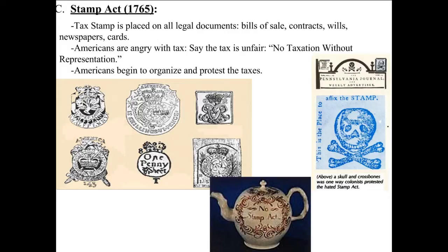In 1765, the British Parliament came up with another tax to put on the colonies to raise revenue to pay off the French and Indian War, and it was called the Stamp Act. Just like stamps that go on letters sent from one place to another, these stamps were placed on all legal documents, bills of sale, contracts, wills, newspapers, and cards, and they had to be stuck on the legal document — and those stamps cost money.